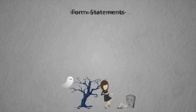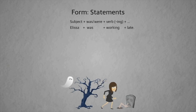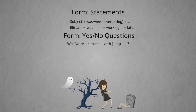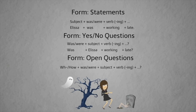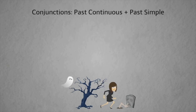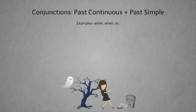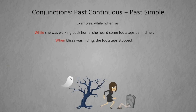Form summary: Statements — subject + was/were (or wasn't/weren't) + verb-ing. Example: 'Alisa was working late at the office.' Yes/no questions — was/were + subject + verb-ing: 'Was Alisa working late?' Open questions — wh-/how question word + was/were + subject + verb-ing: 'Why was Alisa working late?' To join past continuous and past simple, use conjunctions: while, when, as. Examples: 'While she was walking home, she heard footsteps.' 'When Alisa was hiding, the footsteps stopped.' 'As she was running, she saw a cemetery.'